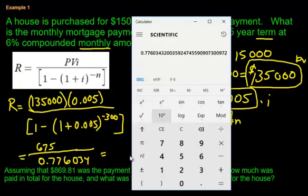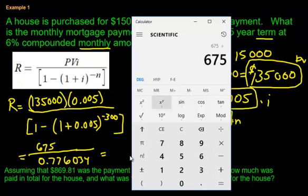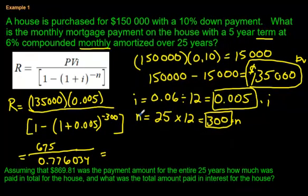But this is really important here. We're going to figure out... I'm actually going to put this in memory. And go 675 divided by... Recall that? Okay, it didn't recall properly. So I'm going to hit clear. 675 divided by the few decimals that I do remember. And I wrote them down. 0.776034. 869.81.